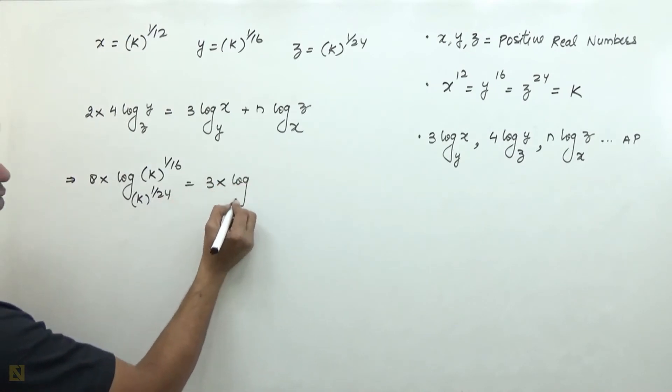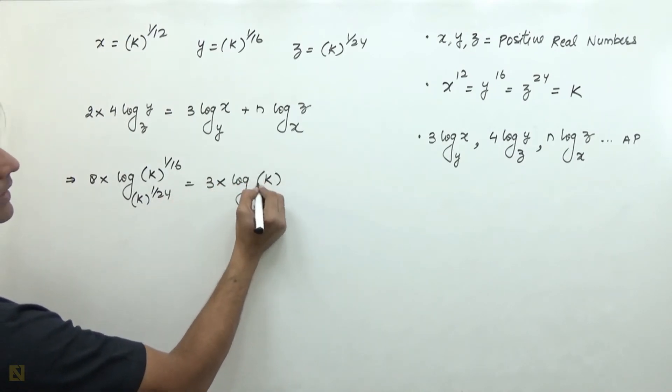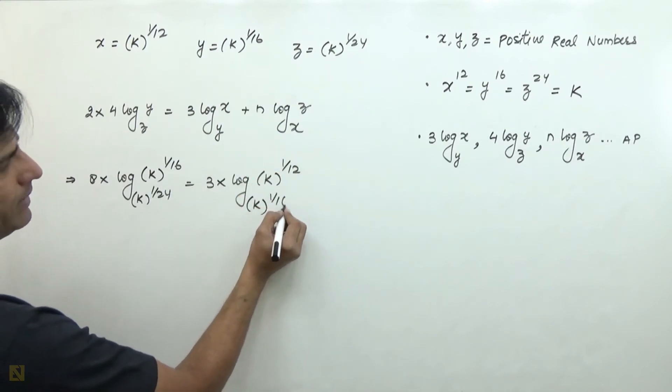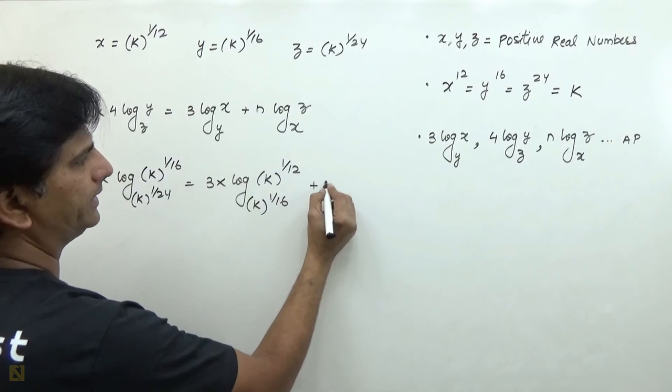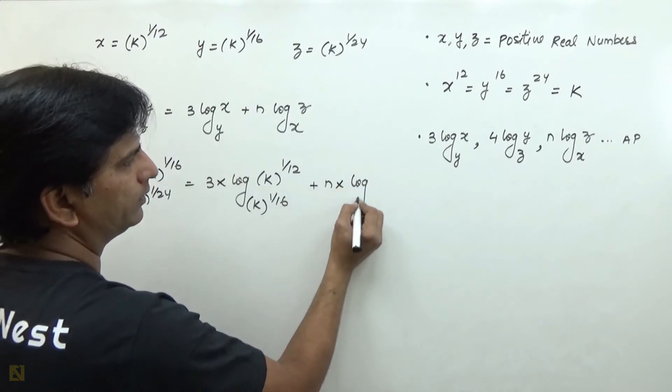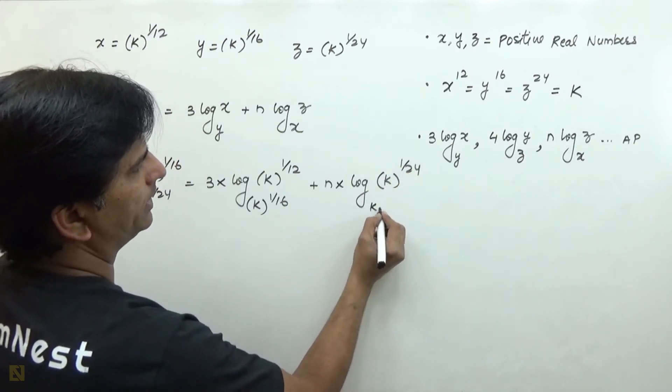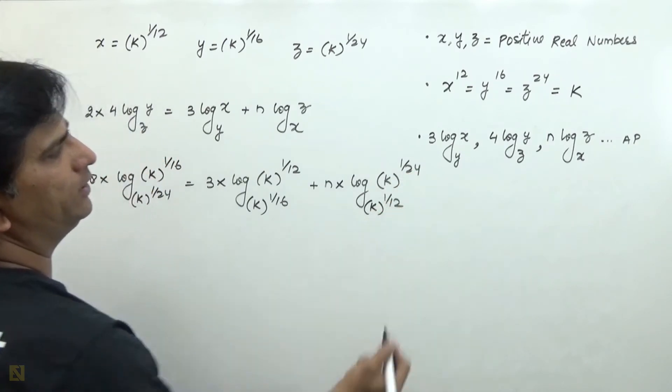equals 3 times log of k raised to the power 1 by 12 to the base k raised to the power 1 by 16, plus n times log of k raised to the power 1 by 24 to the base k raised to the power 1 by 12.